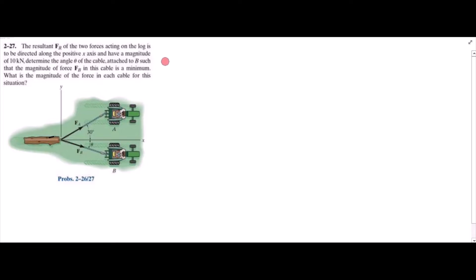This is problem 2-27 from R.C. Hibbeler Engineering Statics, 12th edition. According to this problem, the resultant of two forces acts on the x-axis and has a magnitude of 10 kN. We have to determine the angle theta such that the force Fp is minimum, and we also have to determine the force Fa.